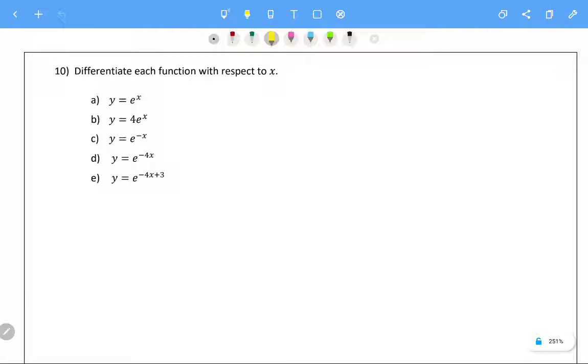So let's have a go at differentiating each of these functions. We've got five functions to have a look at. Let's first look at a. So a, dy dx. Well by definition, e to the x's derivative is e to the x.